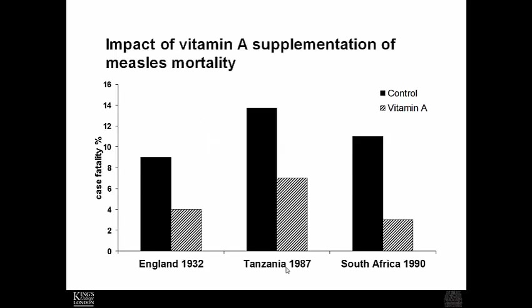Focusing on cell-mediated immunity and childhood mortality, three separate studies carried out over the last 80 years have demonstrated the link between vitamin A status and mortality as it pertains to cell-mediated immune response to viruses — in this case, the measles virus. Studies in England in 1932, Tanzania in 1987, and South Africa in 1990 all show that fatalities from measles were significantly lower in children supplemented with vitamin A compared to controls with diagnosed vitamin A deficiency.